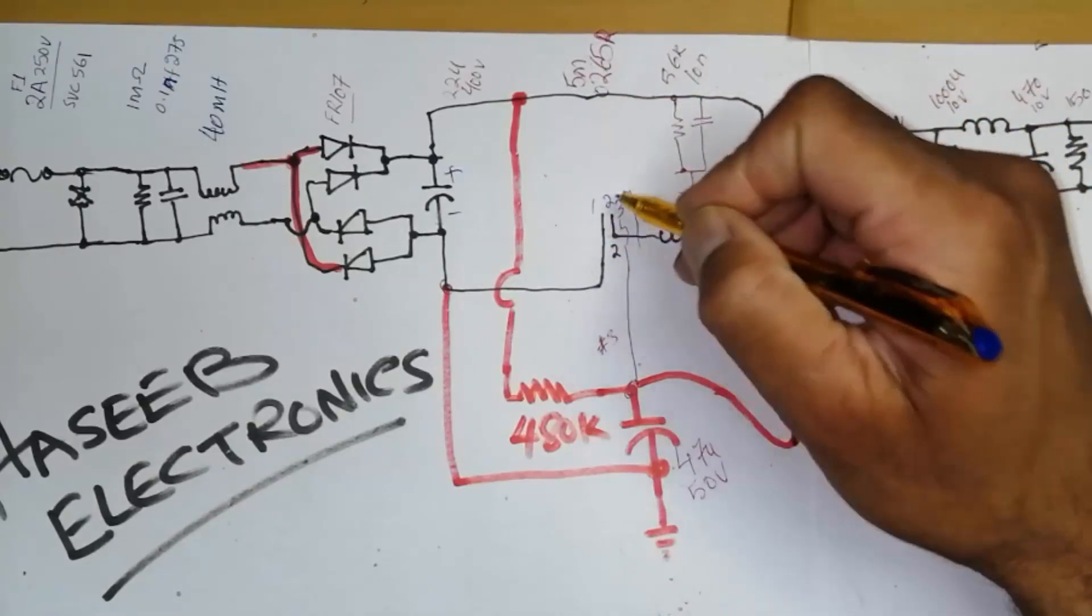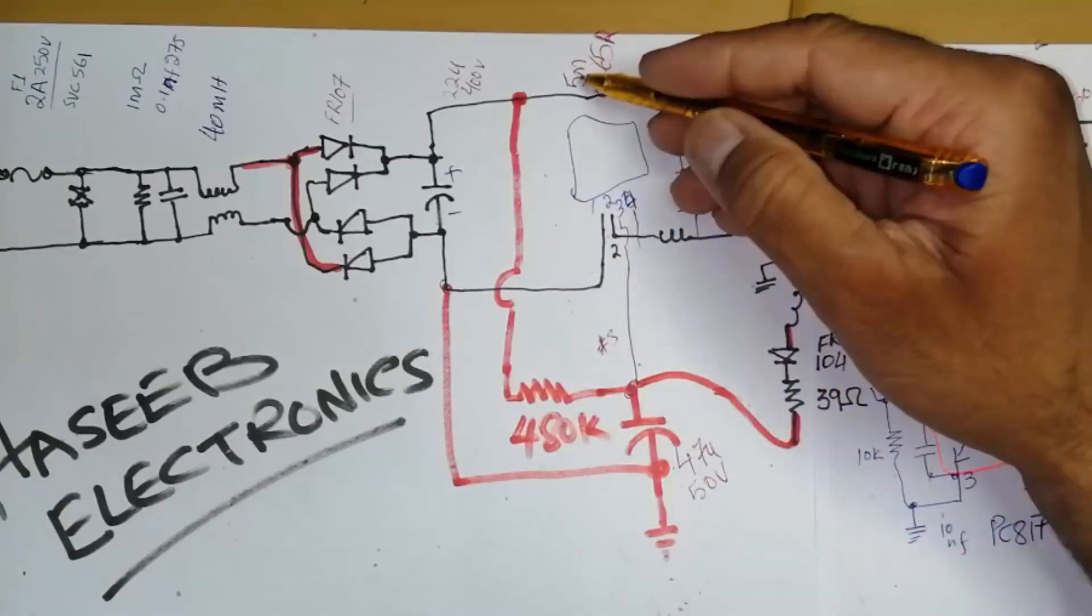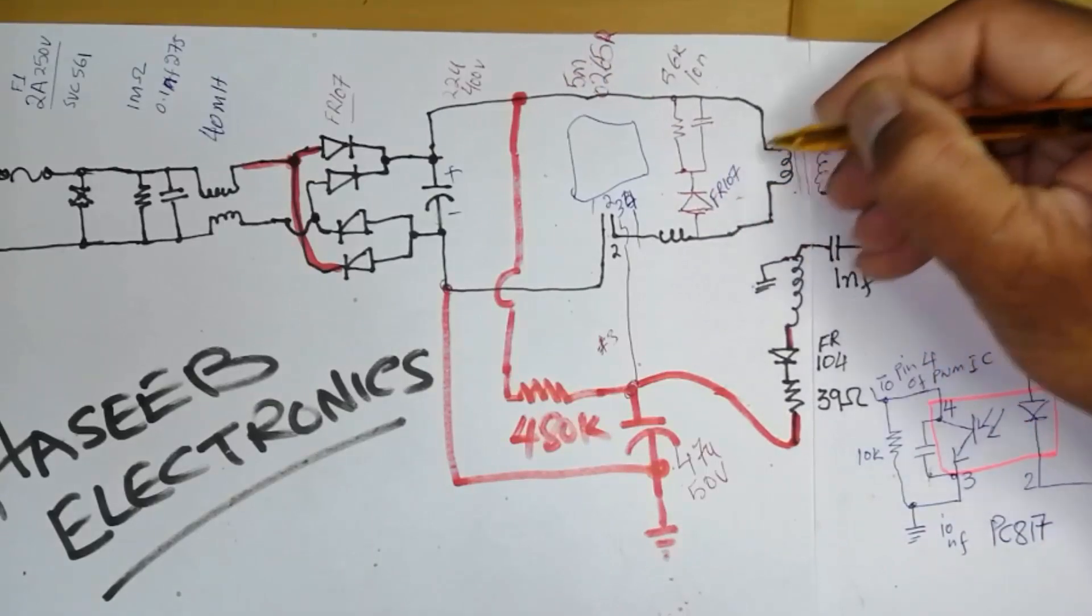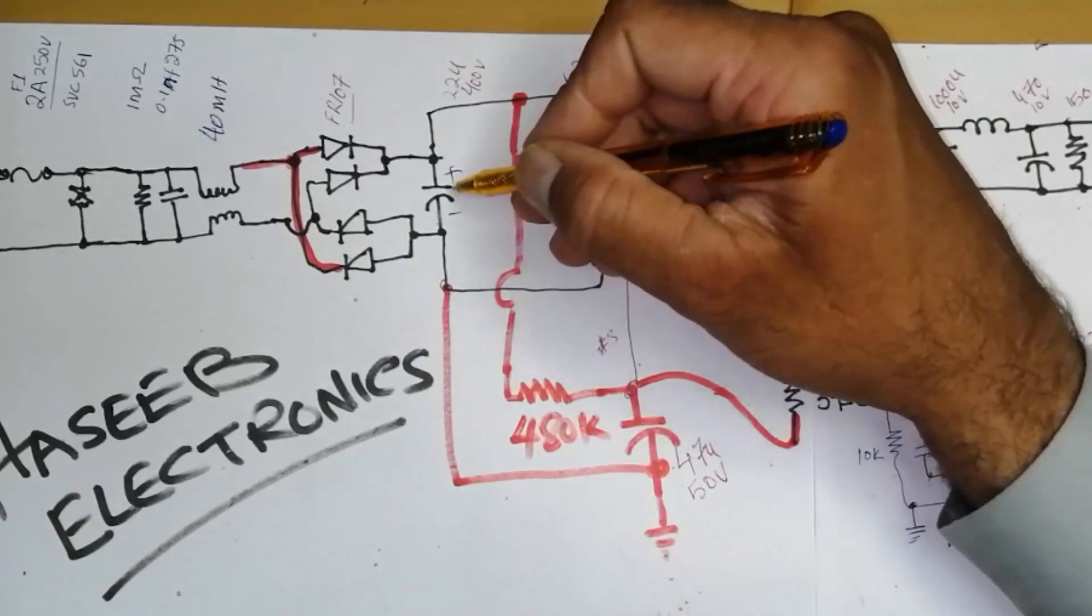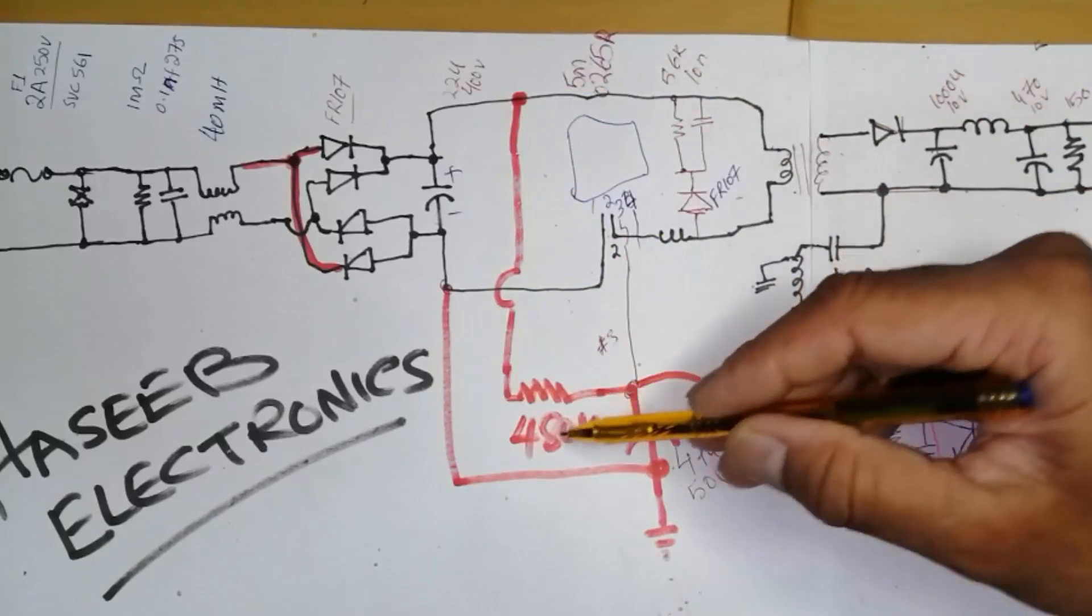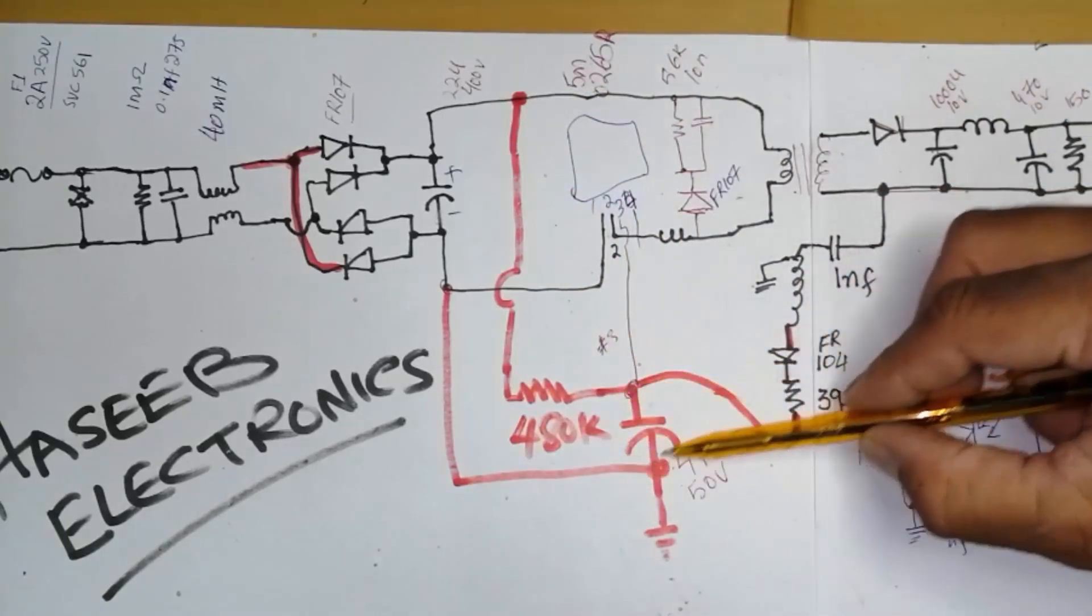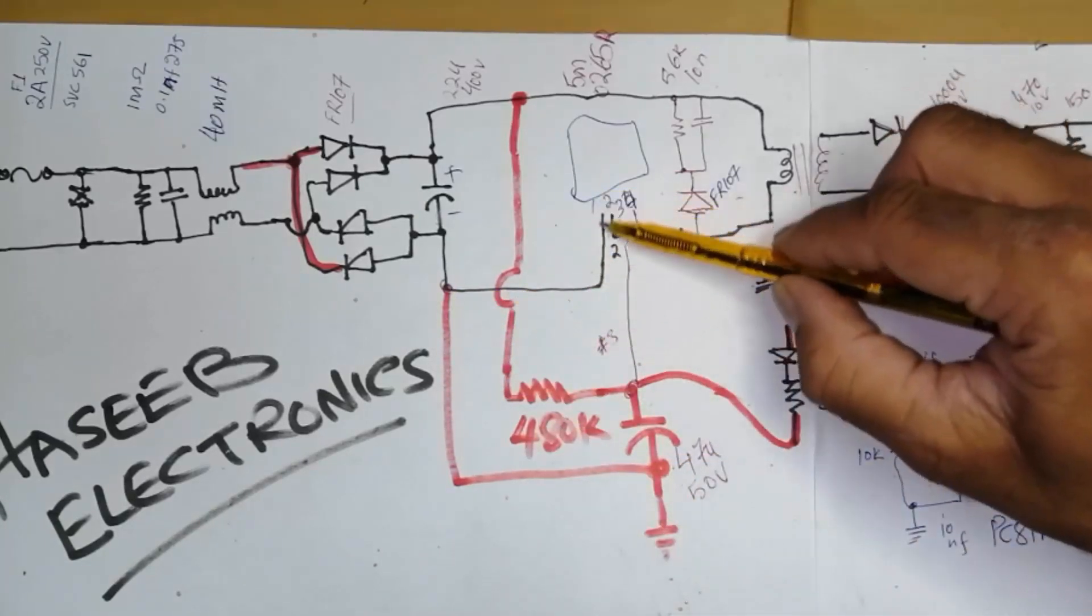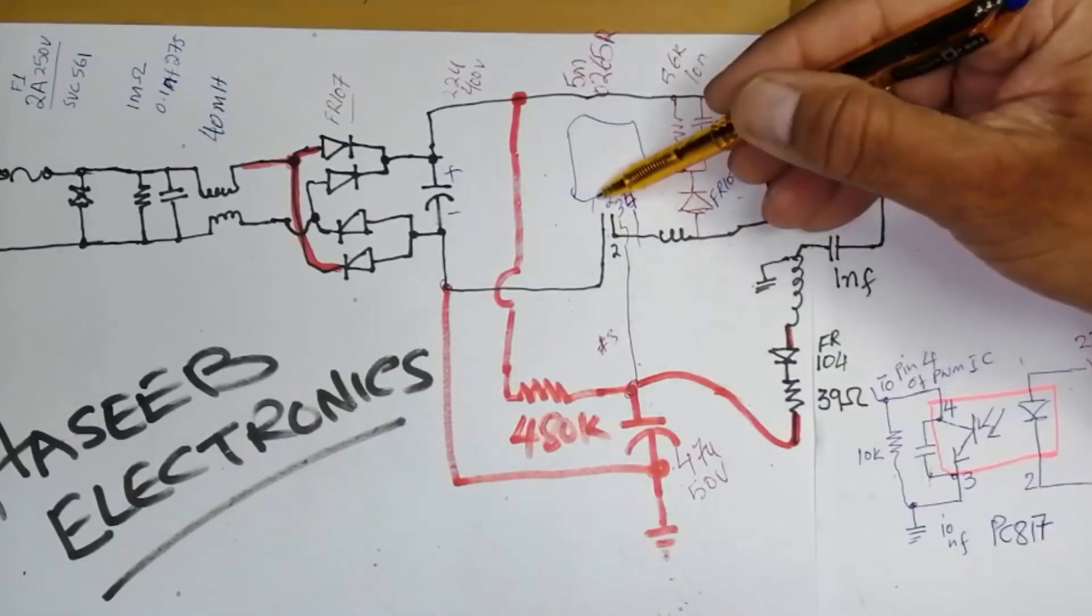Pin number 1 is ground, pin number 2 is drive. Here is IC 5M0265. With FR107 diode, we will find 330 plus voltage here. This voltage will connect to the VCC capacitor from 480k resistor to charge this capacitor. Ground line is connected here, power ground and signal ground to pin number 1 of this IC.